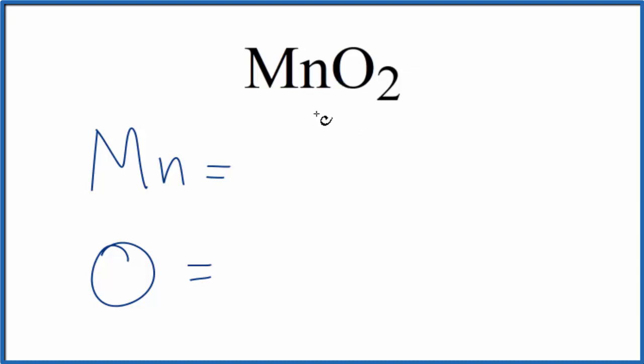For manganese, there's no subscript written, so we assume that's one - one manganese atom. For oxygen, the subscript is two, so two oxygen atoms. Add them up: total of three atoms for MnO2. Sometimes you're asked to figure out how many atoms are in one mole of MnO2.